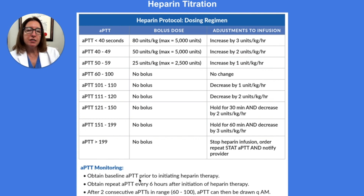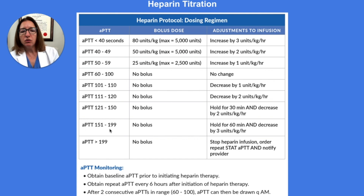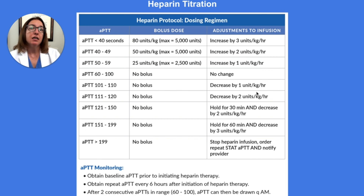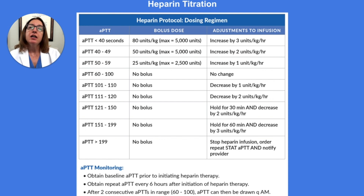We always want to get our patient's APTT level prior to initiating therapy, and then get a repeat APTT level every six hours. We use that level to determine whether we need to administer a bolus dose and/or adjust the infusion rate. When we get two consecutive APTT levels within the ideal range — between 60 and 100 — we can start drawing the APTT level every morning instead of every six hours.